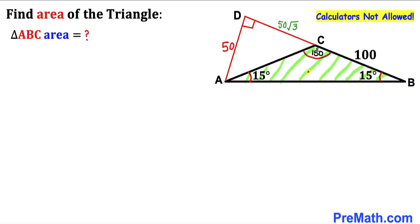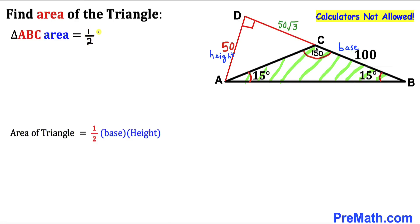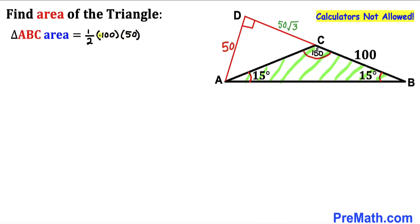Now for the final step of method one, let's calculate the area of triangle ABC using the formula: Area = ½ × base × height. Our base is BC = 100 and the height is AD = 50. So the area equals ½ × 100 × 50. That gives us 50 × 50 = 2500. Therefore the area of triangle ABC is 2500 square units.